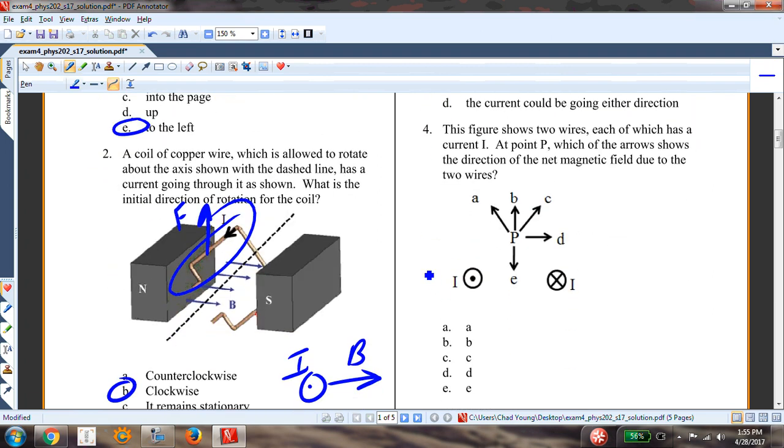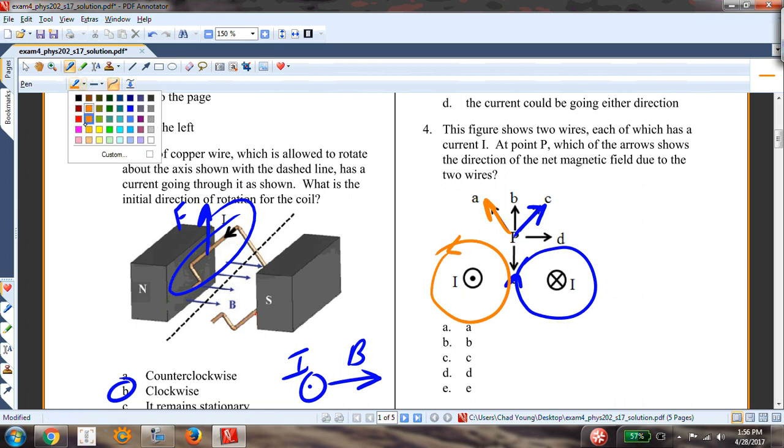This figure shows two wires, each of which has a current I at point P. Which of the arrows shows the direction of the net magnetic field? So I have two things here. This one's into the page, so my magnetic field is clockwise, like that. And so up here, the magnetic field will be like that. And the other one is out of the page, so my magnetic field will be counterclockwise. And so up at this point P, it's going to be in that direction. So the net magnetic field is going to be in that direction. So B is the right answer.